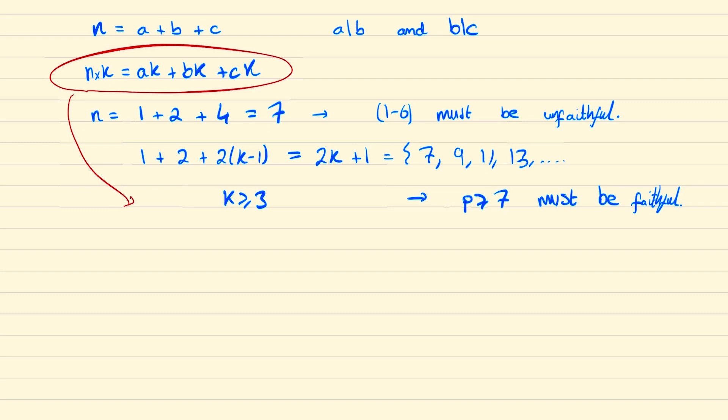From this property we know that if a number contains a prime factor greater than 5 then it must be faithful, and so the only numbers which could be unfaithful will be any number of the form 2 to the x, 3 to the y, times 5 to the z, and we can try and find an upper bound for x, y, and z.